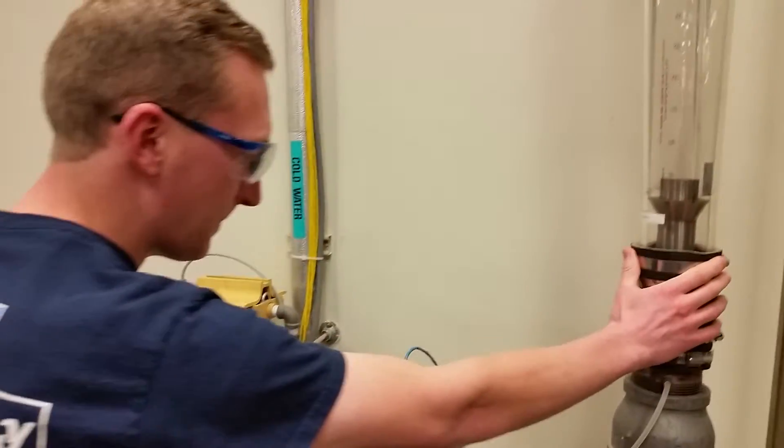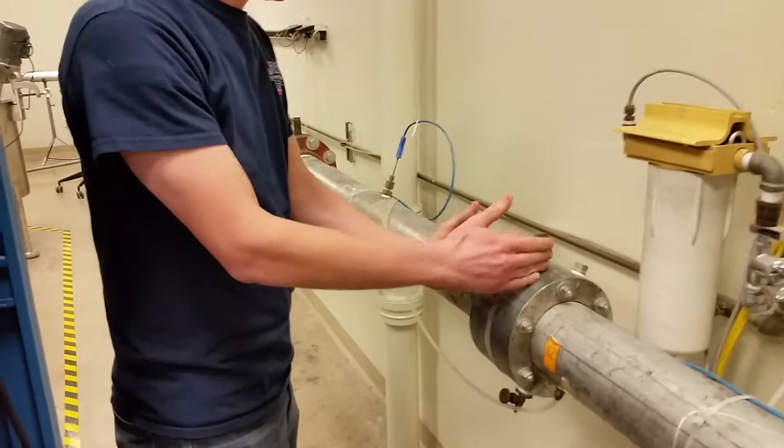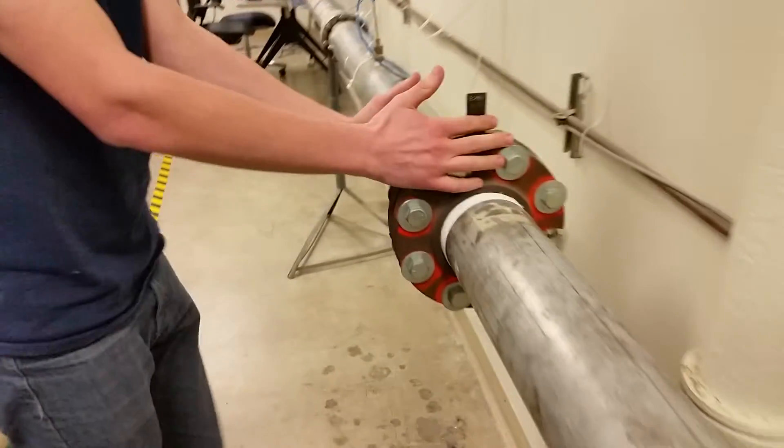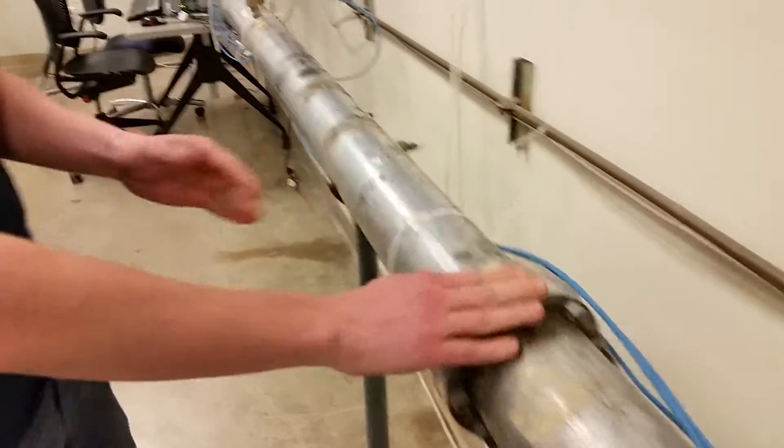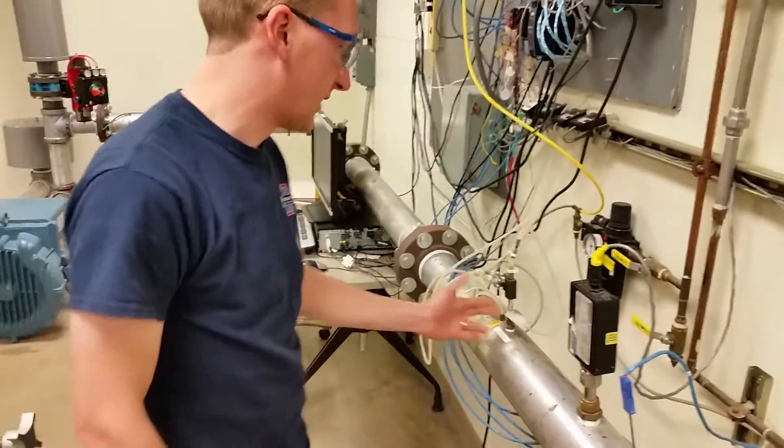There's the rotometer right here. This is just the thermocouple. Orifice meter, another thermocouple. Nozzle meter, thermocouple. Venturi meter, thermocouple. This is a mass flow meter and a pitot tube.